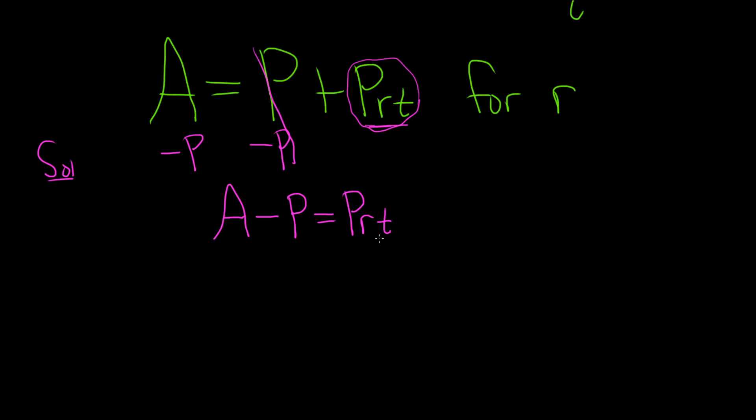So in order to undo that, we have to do the inverse operation of multiplication, which is division. So we'll divide both sides by PT.